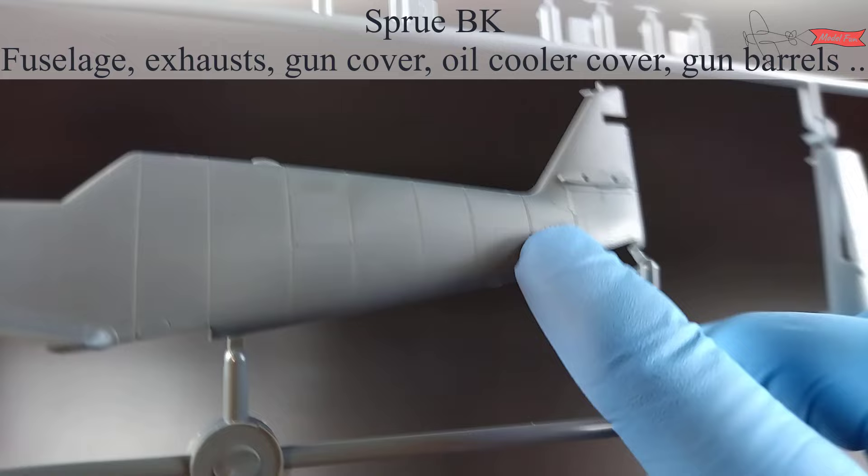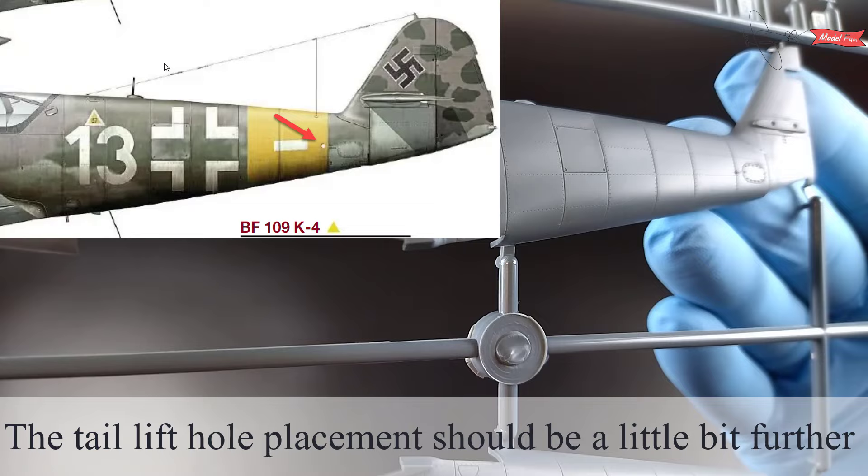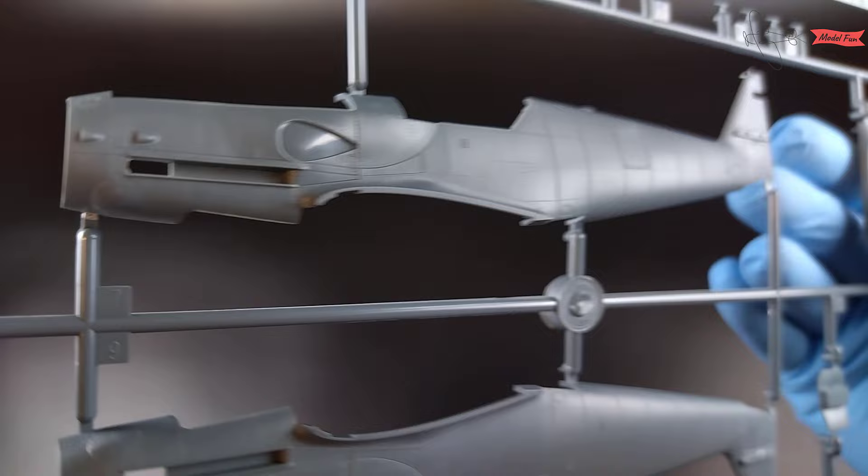Sprue B and we have fuselage here. The lift hole on the tail needs to be moved a bit to the front. Easy fix, I would say. Details are very nice, sharp and looking good.